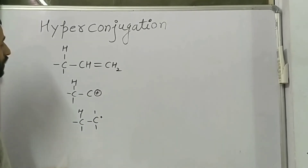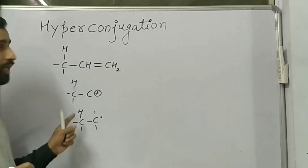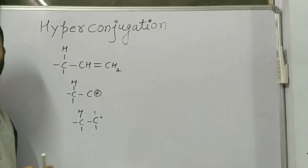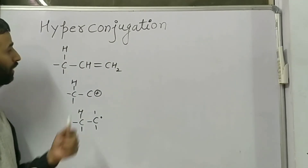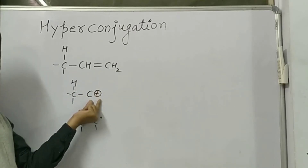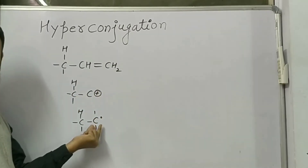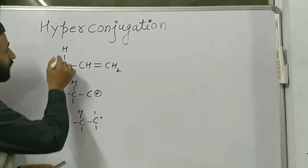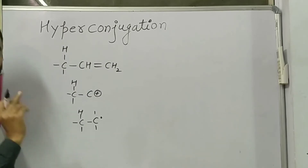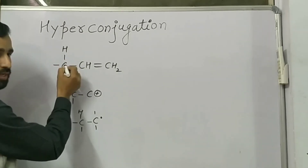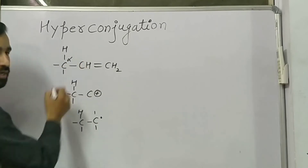These are the three cases where we can use the concept of hyperconjugation: either a double bond, a carbocation, or a free radical attached to a saturated carbon. This saturated carbon is further attached to at least one hydrogen. The saturated carbon next to the double bond is called the alpha carbon.